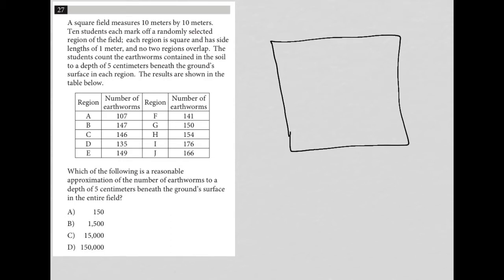And this gives you an example of a plug-in picture strategy, which says anytime the question describes something that can be drawn, it's better to draw it than to envision it or imagine it. So 10 by 10 meters square.